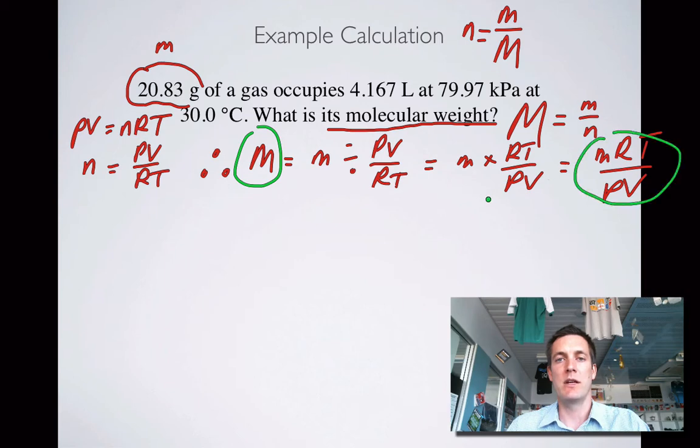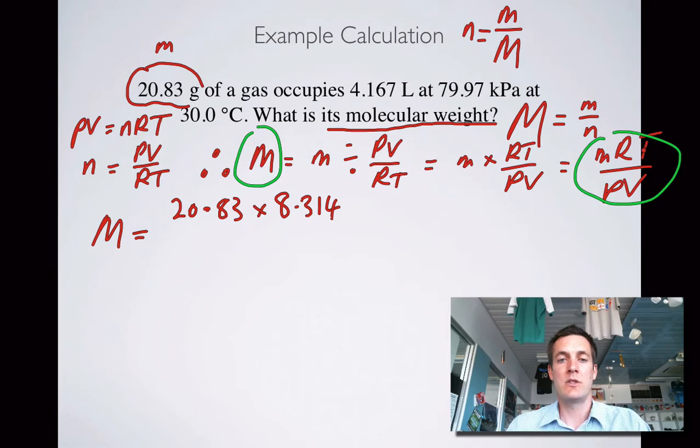Let's do the calculation. Capital M, the molar mass, is equal to the mass, so 20.83 multiplied by the gas constant, that's a number that we don't have to remember, it's on our data sheet. Times the temperature, but that's got to be in Kelvin. So I'm going to add 273.15 to that and make that 303.15.